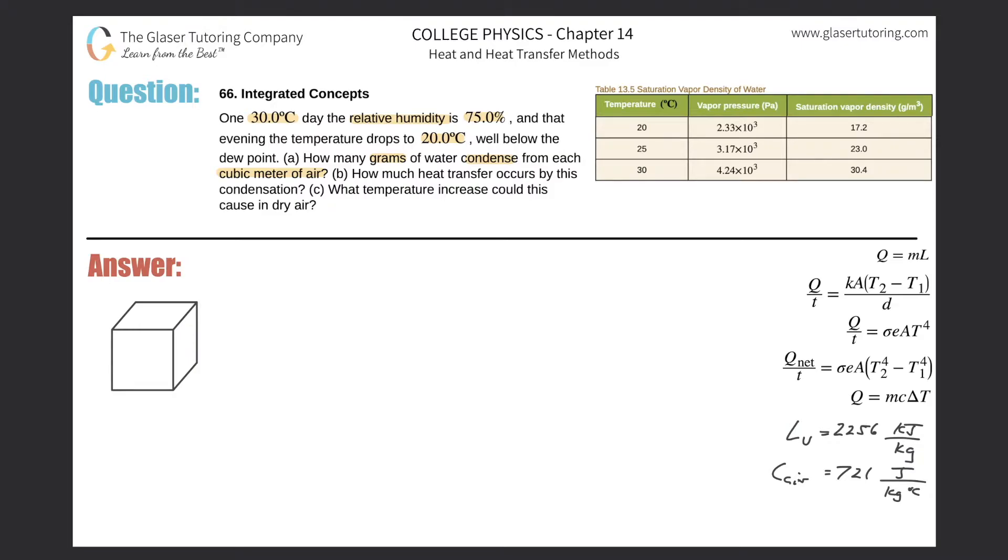So first thing is, remember relative humidity is equal to the vapor density that is in the air divided by the saturation vapor density, multiplied then by 100. They tell us the relative humidity, and they tell us let's focus on this first part. A certain day there's 30 degrees Celsius air and the relative humidity is 75%. That means the relative humidity here is 75.